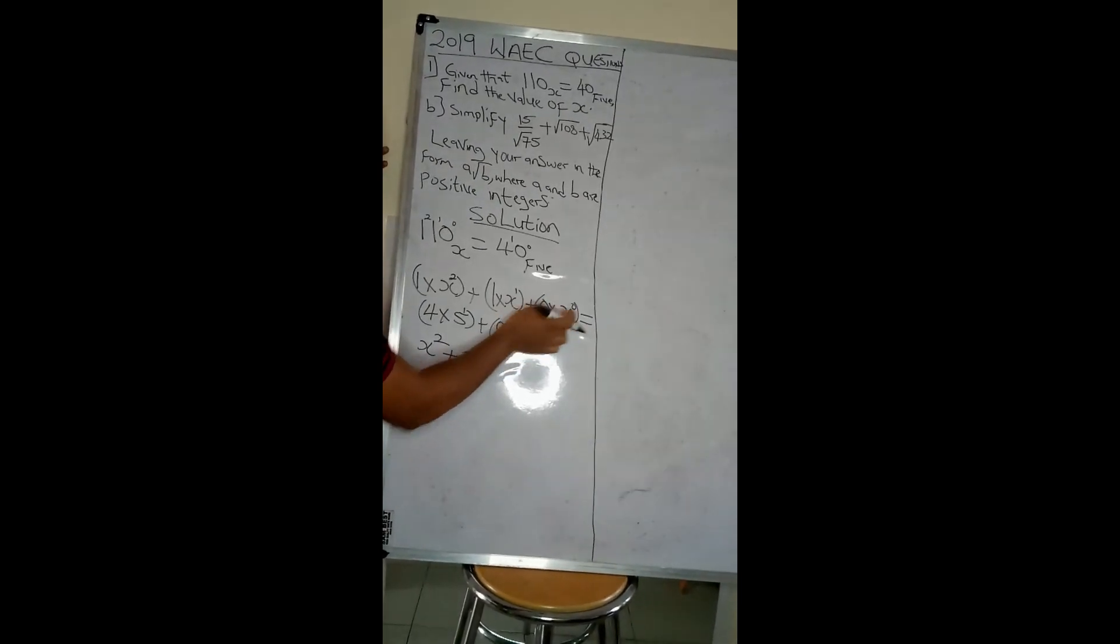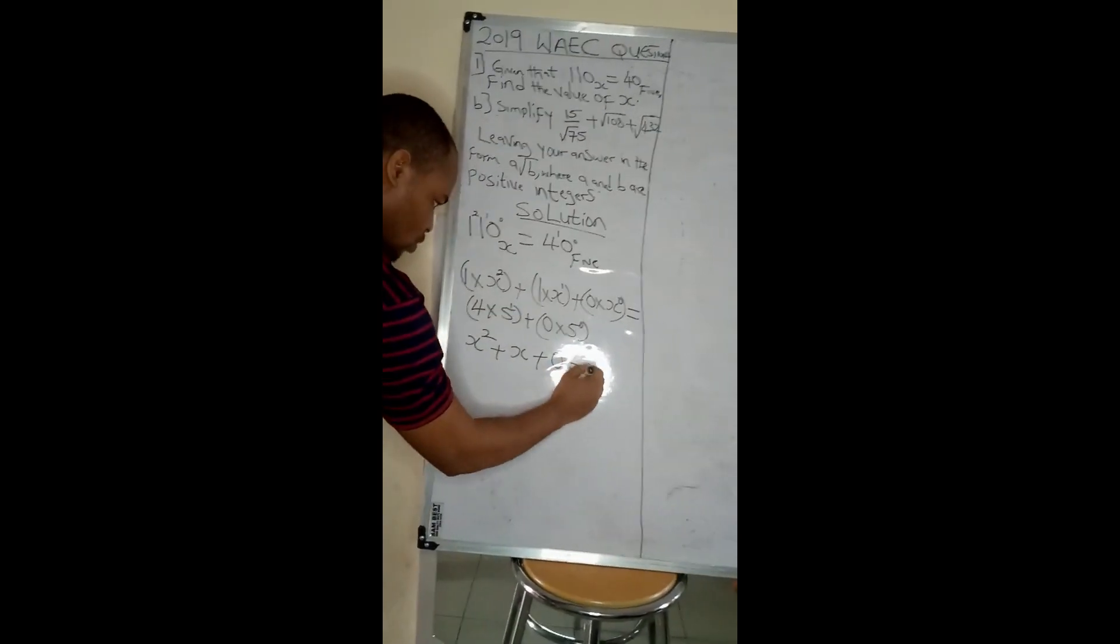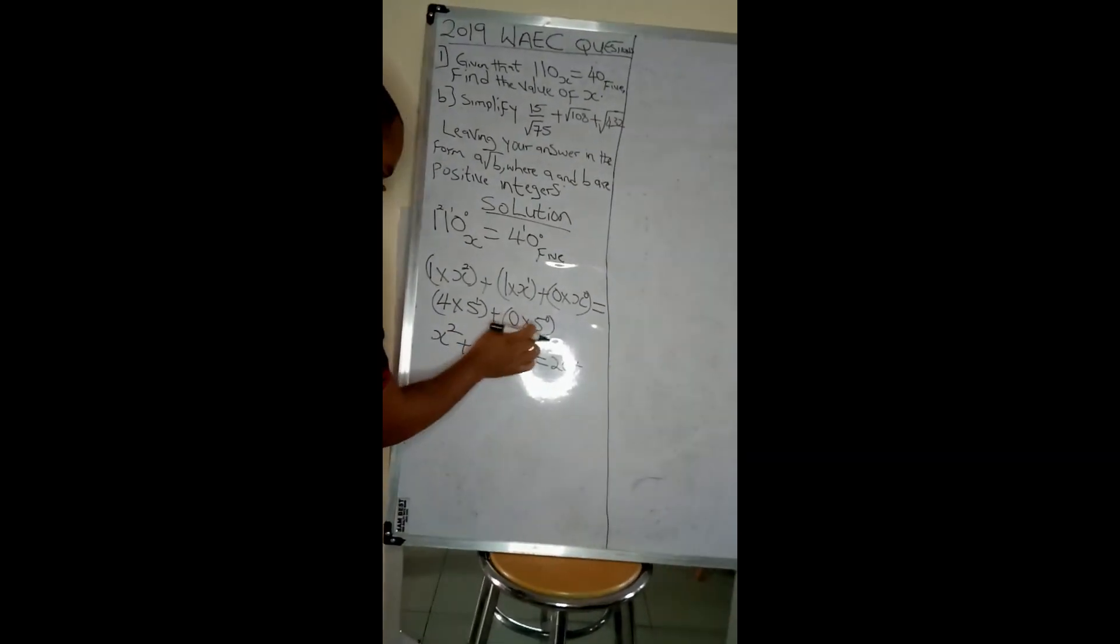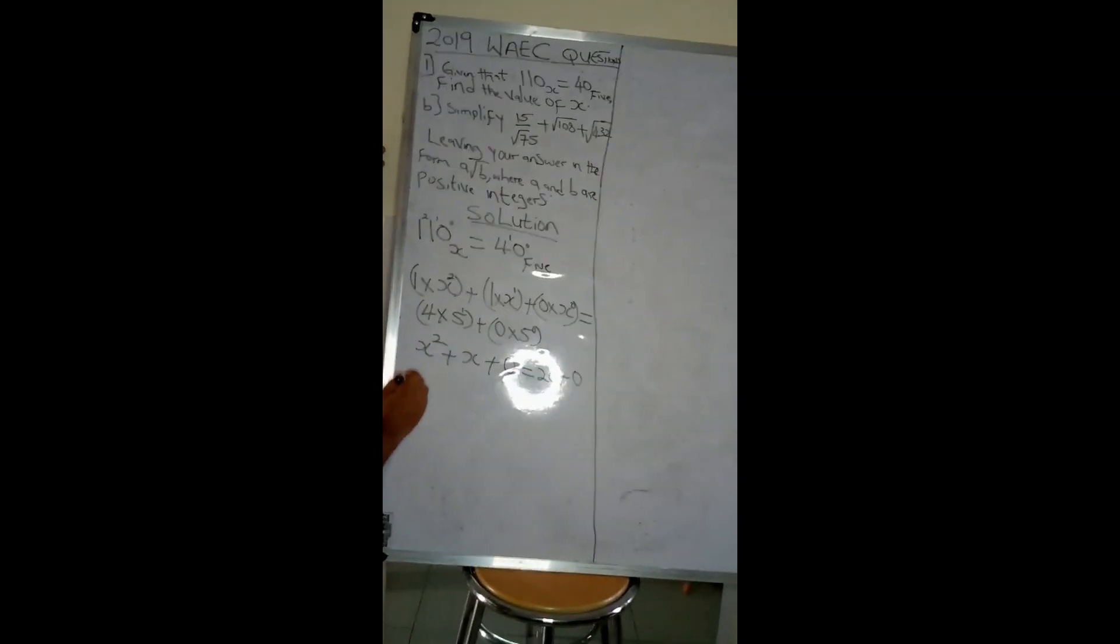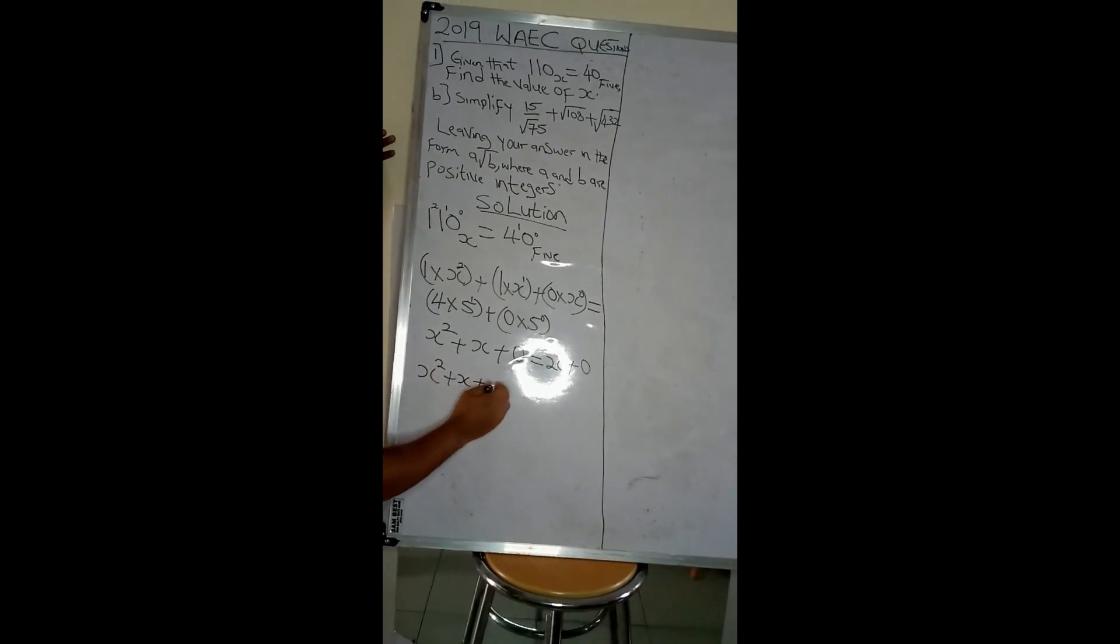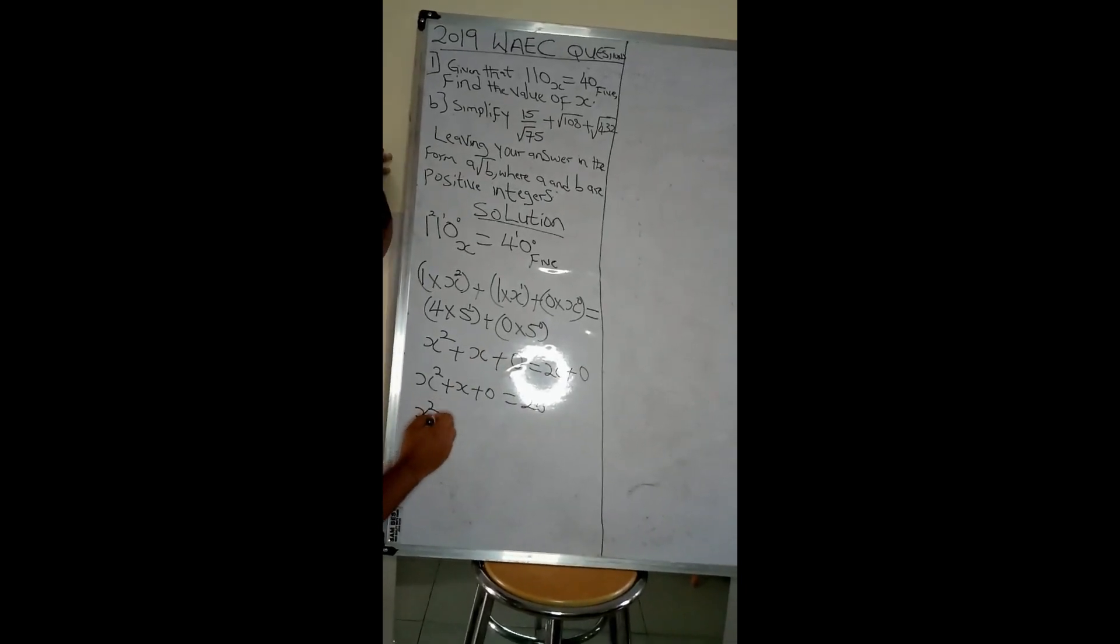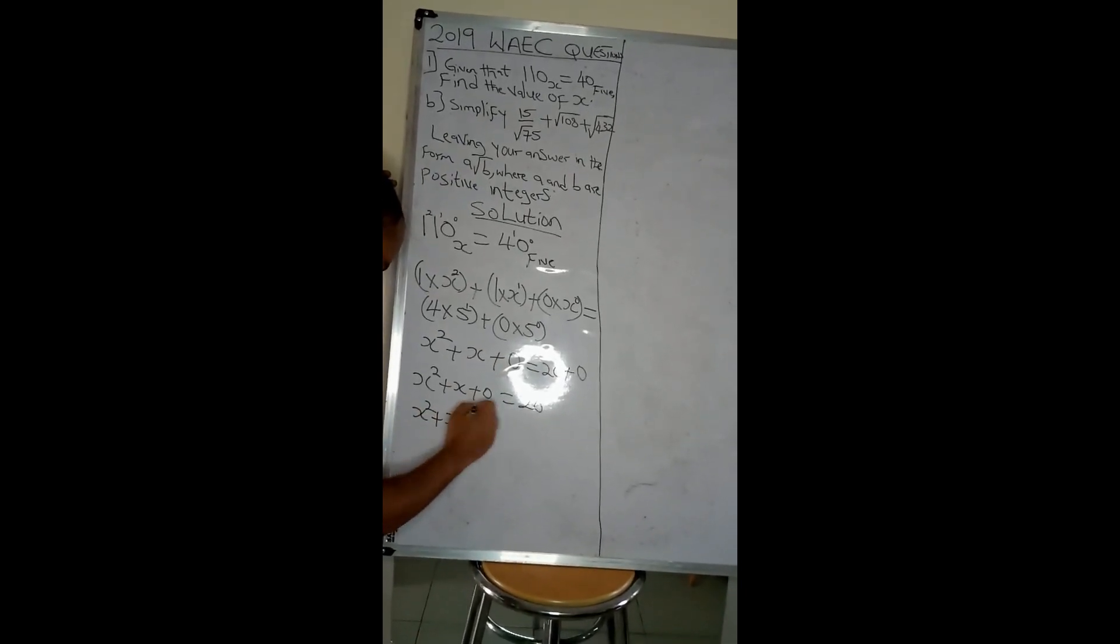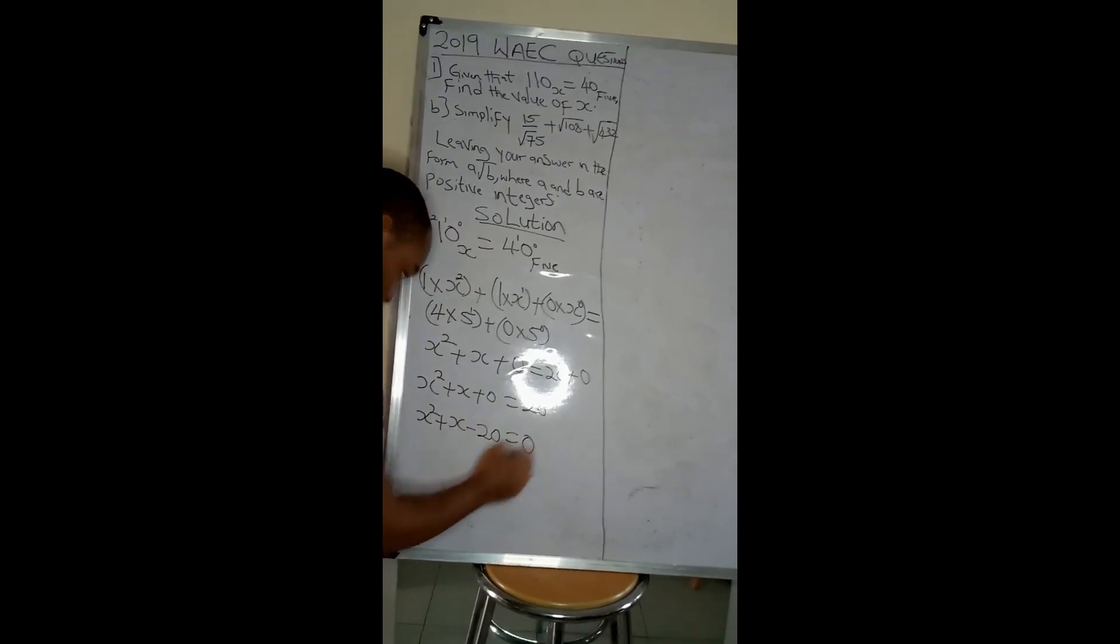Equals 5 to the power of 1 is 5, 4 times 5 is 20, plus 5 to the power of 0 is 1, 0 times 1 is 0. So I have x squared plus x plus 0 equals 20. Bringing this here, I'll have x squared plus x. When this crosses the equality sign it becomes minus 20, equals 0.